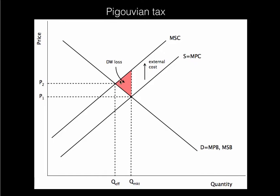So that would put them at the right point, and they'd be producing the efficient amount. That would eliminate the deadweight loss. This is an example of a tax that eliminates deadweight loss rather than creating deadweight loss, because normally when we were doing taxes before, we were assuming we were starting at the efficient point and then taxing, so that always creates deadweight loss. In this case, this tax would eliminate deadweight loss, assuming there are no other costs of this tax that we're looking at.